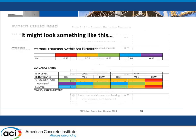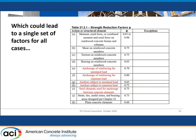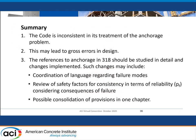Out of that type of philosophy, you could possibly generate — lo and behold — a single table for strength reduction factors for the code that would cover everything. If we could do that, I think it would make a huge difference to the way people treat this problem using the document. I haven't talked about how to deal with the 5% fractile — that's a whole separate conversation about whether the variability in concrete tensile strength needs to be explicitly considered that way or taken in the phi factor. But ultimately we need to get it straight so the design community is not left scratching their heads trying to figure out what the code intended.